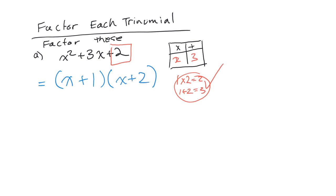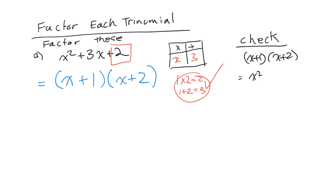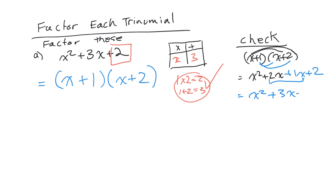Let's quickly check that. We have x plus 1 times x plus 2. If we expand, we get x squared plus 2x, then plus 1x plus 2, which gives us x squared plus 3x plus 2. It worked!